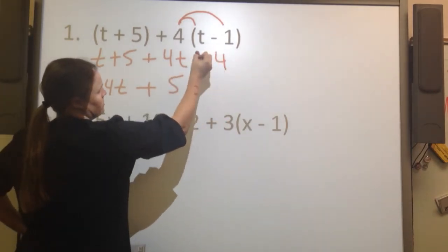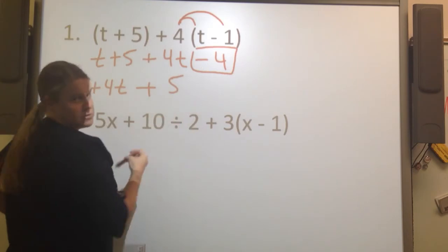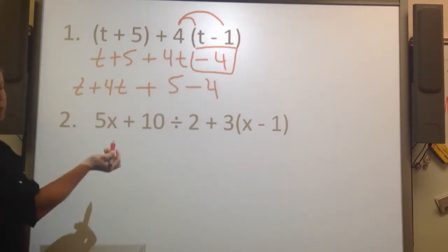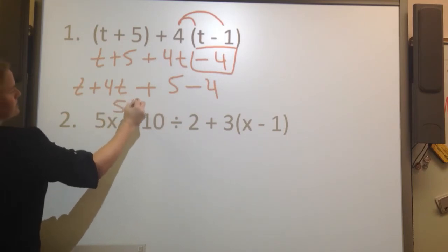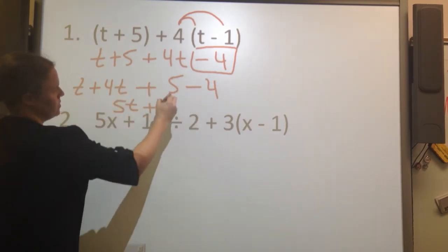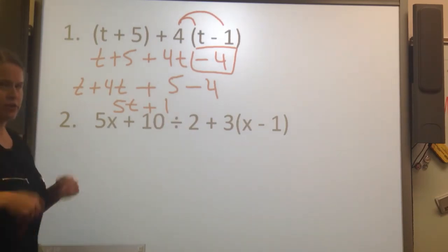I'm going to rewrite it so that my variables are together and my constants are together. This sums the subtraction, so I'm just going to bring that whole thing down. And then t plus 4t is 5t, and then 5 minus 4 is 1, and then you're done.